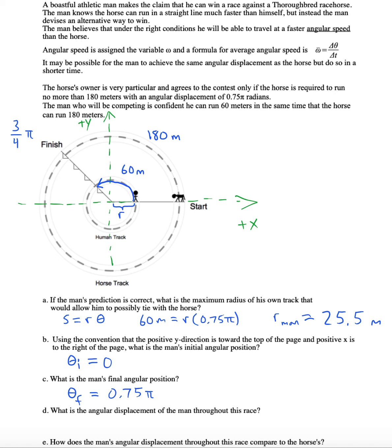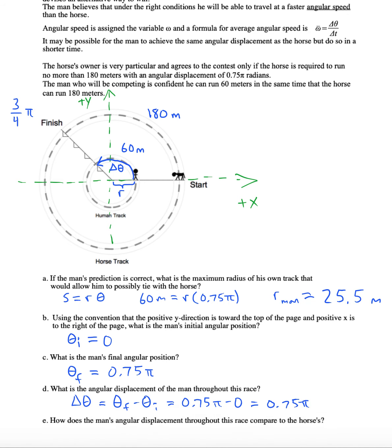Now we want to find what is called the angular displacement, delta theta. And like any delta quantity, it's going to be a final minus initial. It's 0.75 pi. How does the man's angular displacement compare to the horse's in this race? Well, they are the same. So as we can see, the angular displacement is not the same as the distance traveled.